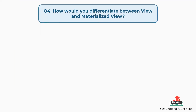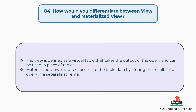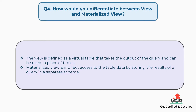Question number four: How would you differentiate between view and materialized view? A view is defined as a virtual table that takes the output of the query and can be used in place of tables. On the other hand, a materialized view is indirect access to the table data by storing the results of a query in a separate schema.